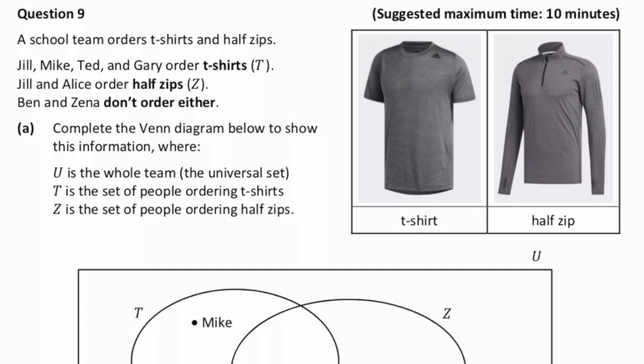A school team orders t-shirts and half-zips. Jill, Mike, Ted and Gary order t-shirts. Jill and Alice order half-zips. Ben and Zena don't order either.